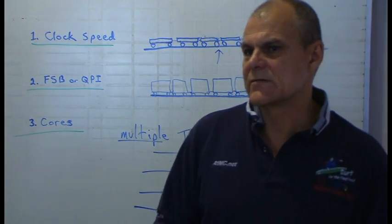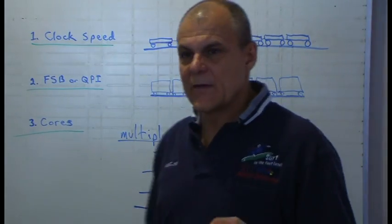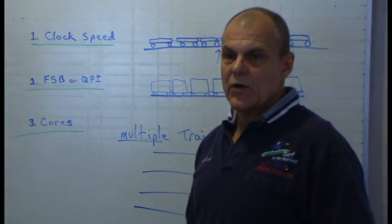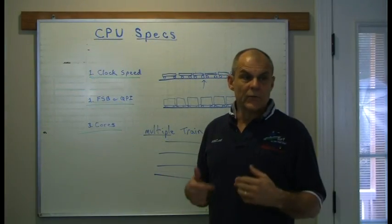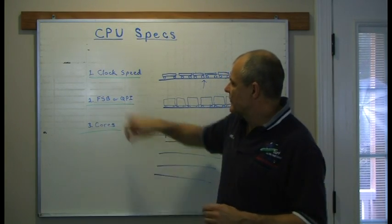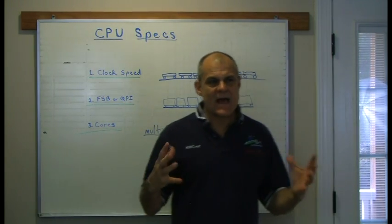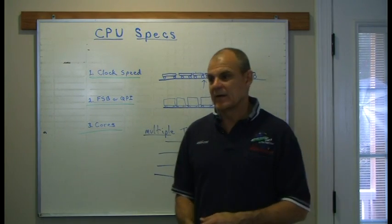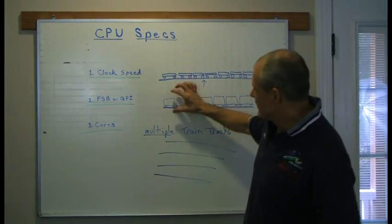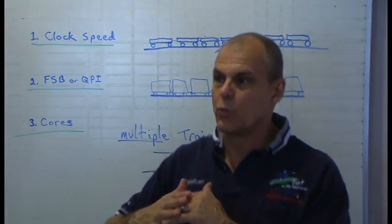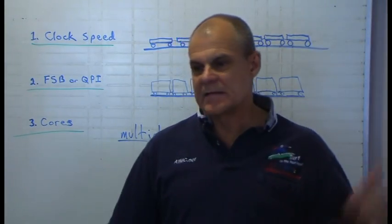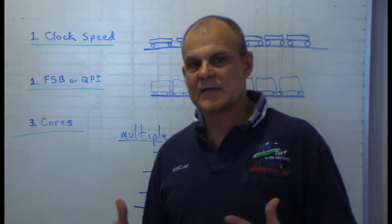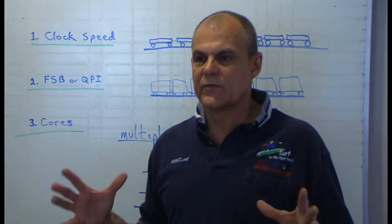The second specification to understand about the CPU is the front side bus or the QPI. This is most often overlooked. The front side bus or QPI has to do with how much data is transferred by your CPU in one gigahertz. Going back to the train analogy, it might be the height of the railroad car — how much data could one car hold. If gigahertz is how many cars per unit of time, then the QPI or front side bus is the height of the car.